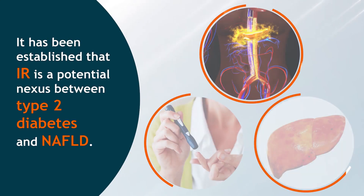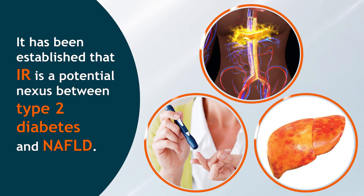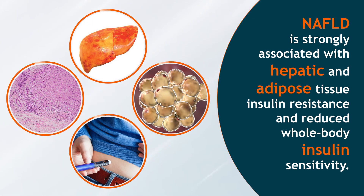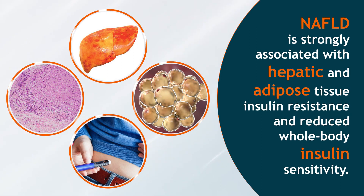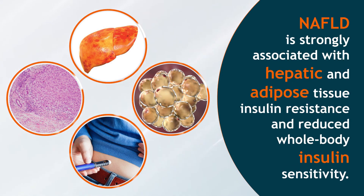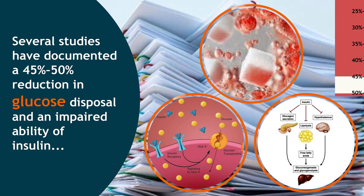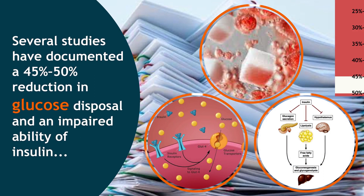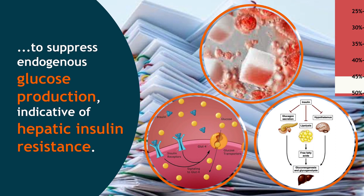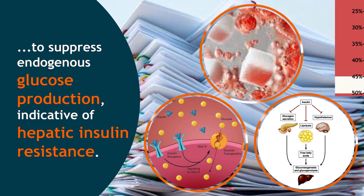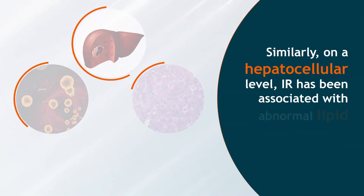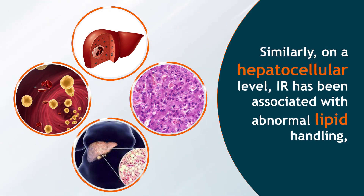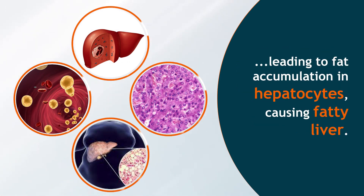Insulin resistance and NAFLD: it has been established that IR is a potential nexus between type 2 diabetes and NAFLD. NAFLD is strongly associated with hepatic and adipose tissue insulin resistance and reduced whole body insulin sensitivity. Several studies have documented a 45 to 50% reduction in glucose disposal and an impaired ability of insulin to suppress endogenous glucose production, indicative of hepatic insulin resistance.